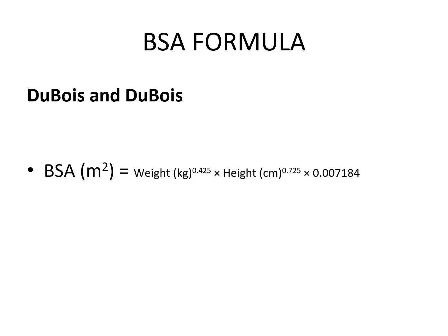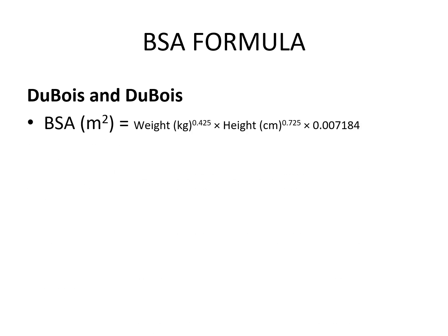For Dubois and Dubois, BSA is expressed as a product of weight in kg raised to the power of 0.425 multiplied by height raised to the power of 0.725 multiplied by 0.007184, which is constant.